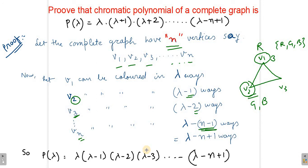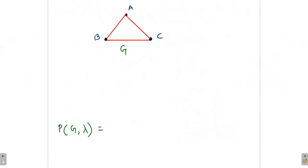So this is the proof of the chromatic polynomial of a complete graph. Now let's take a complete graph and see how we calculate the chromatic polynomial.